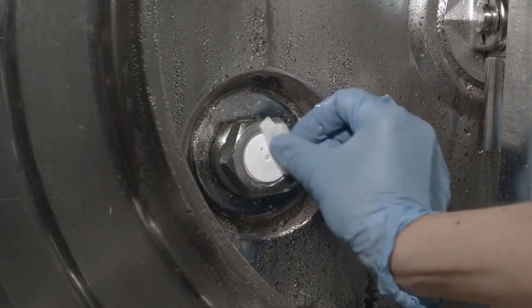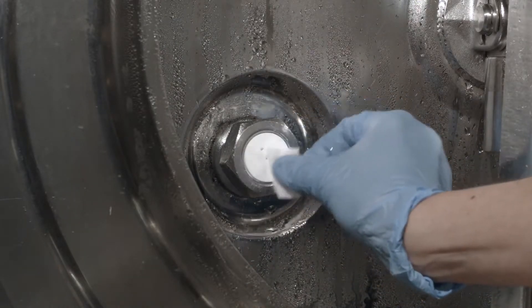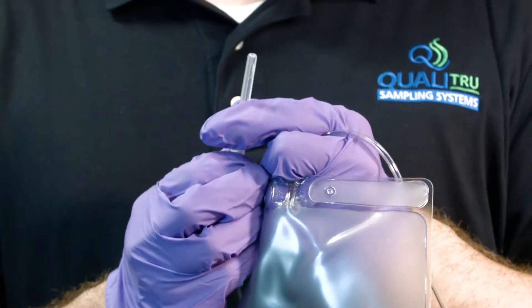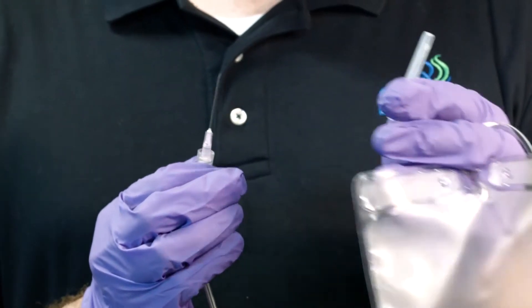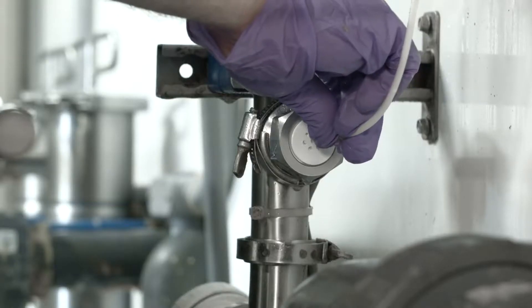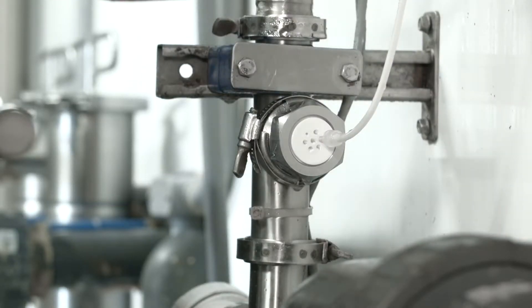With an alcohol swab, sanitize the surface of the septum for 15 to 20 seconds. Next, remove the safety cover from the needle attached to the collection bag and then insert the needle into the septum. Save the safety cover for needle disposal.